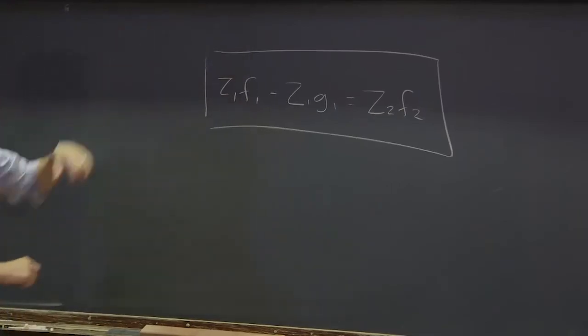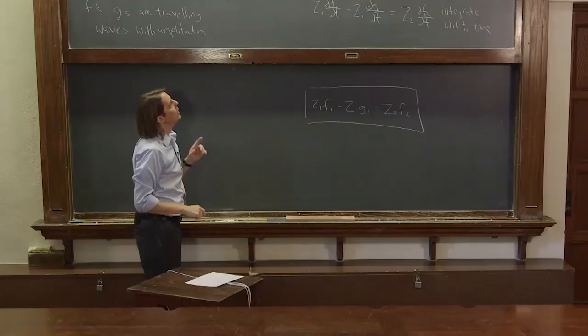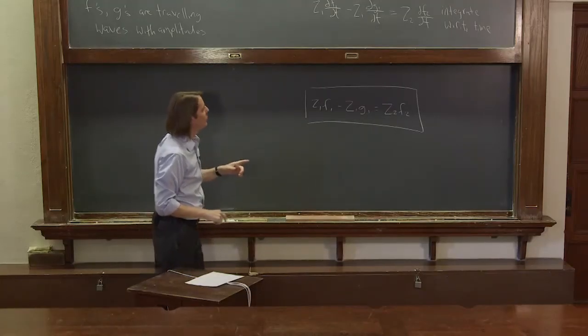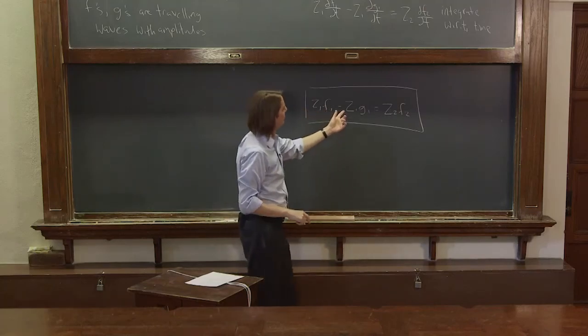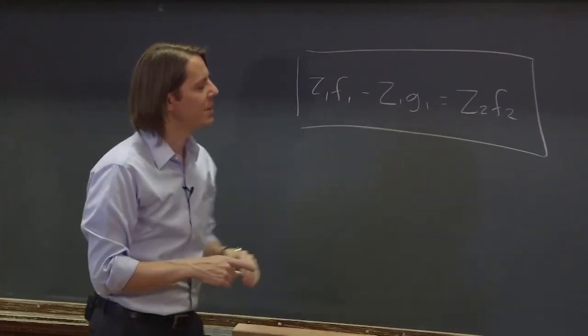So f1 plus g1 has to be f2, and z1 f1 minus z1 g1 has to be z2 f2 to keep the forces balanced. So working with those, we can figure out what happens at the interface.